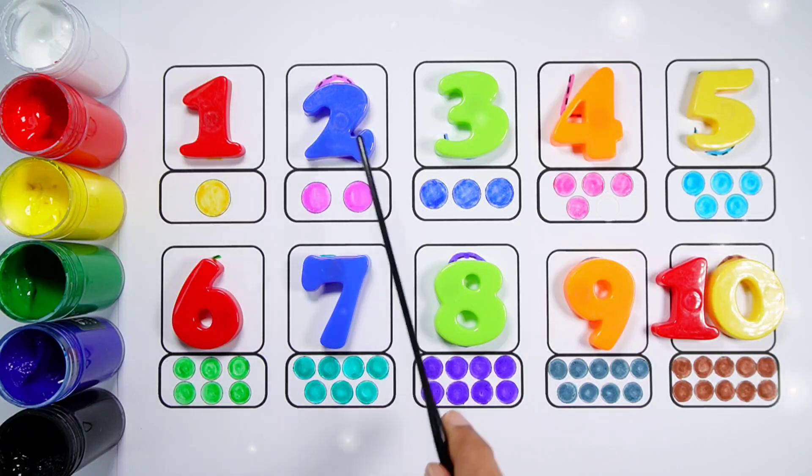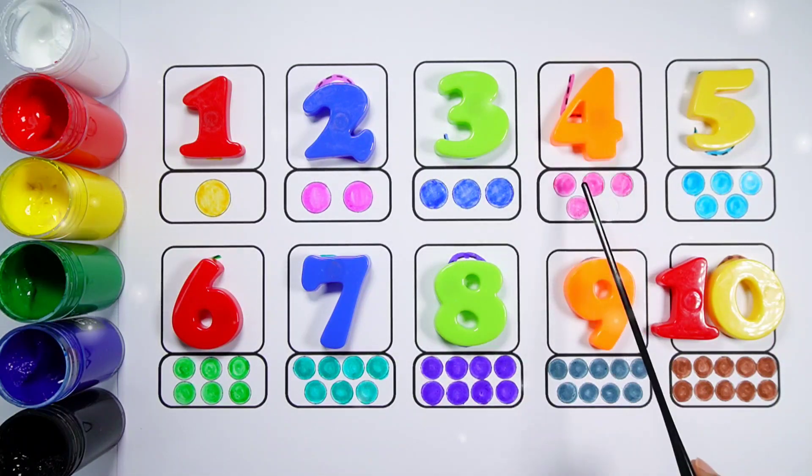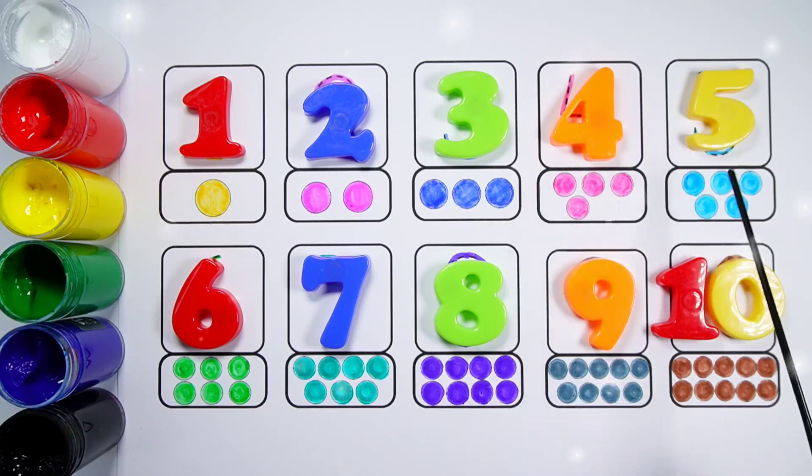Number 1, 1 ball. Number 2, 1, 2, 2 balls. Number 3, 1, 2, 3, 3 balls. Number 4, 1, 2, 3, 4, 4 balls.